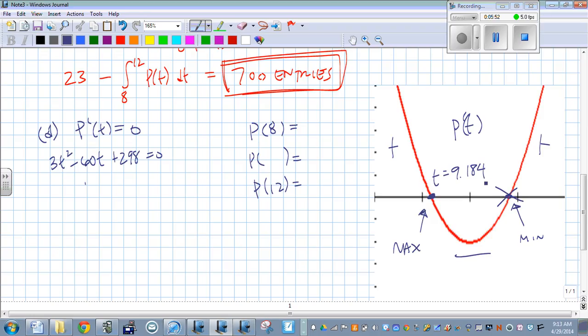But we get this value to be t equals 9.184. Is that right? All right, so we want to check this value. So we have to put each one of these values into the original function.